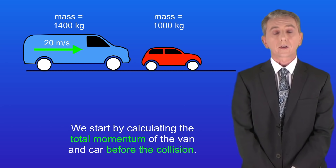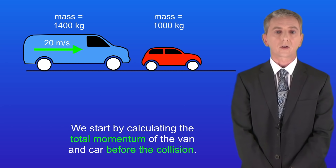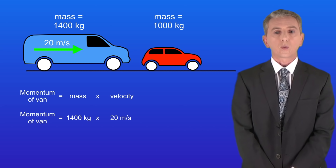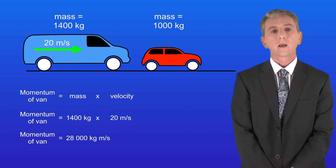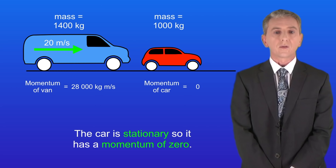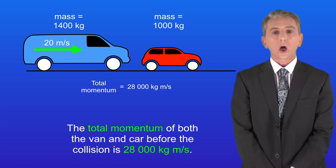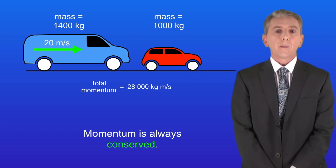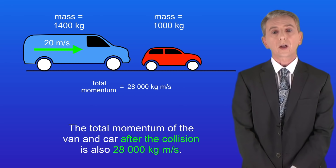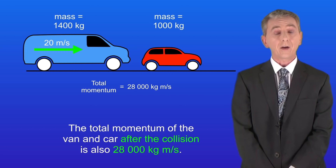Okay, we start by calculating the total momentum of the van and the car before the collision. The mass of the van is 1400 kilograms and the velocity is 20 meters per second. This gives us a value of 28,000 kilograms meters per second for the momentum of the van. The car is stationary so it has a momentum of zero. That means that the total momentum of both the van and the car before the collision is 28,000 kilograms meters per second. Momentum is always conserved, so the total momentum after the collision is also 28,000 kilograms meters per second.